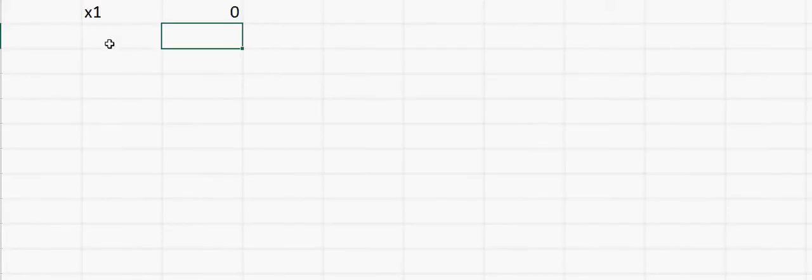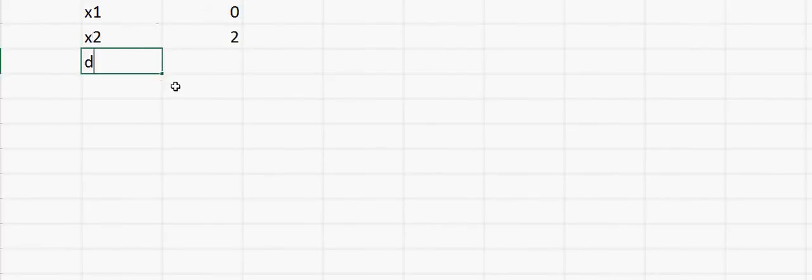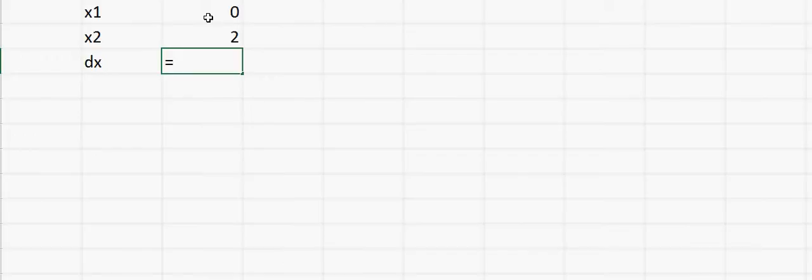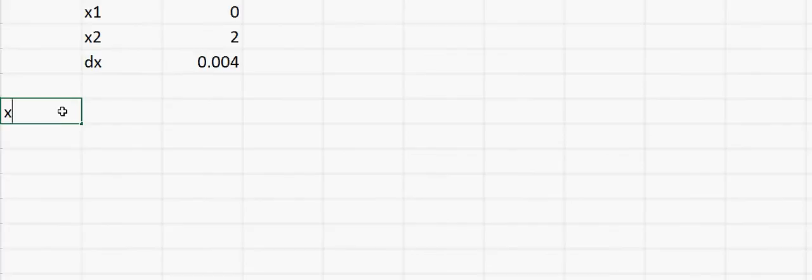Now we are in Excel. Suppose I want to do integration from x1 to x2, so x1 is 0 and x2 is 2. We want to calculate dx — how small we want to go. Let's say we divide this range into 500 equal distances, so dx equals x2 minus x1 divided by 500. Now dx is very small — it's 0.004.